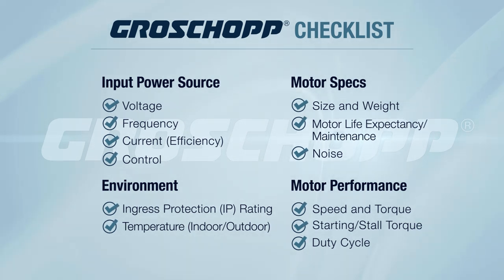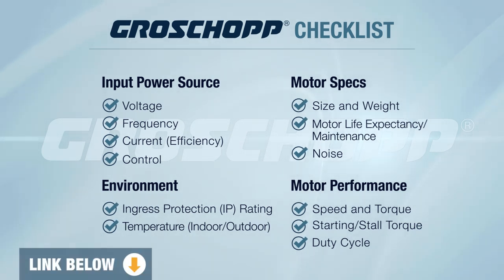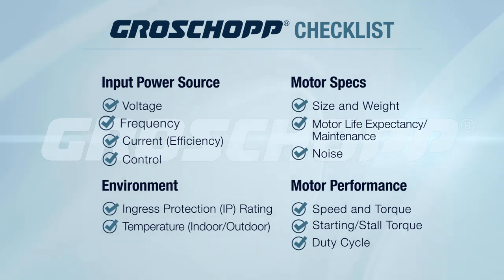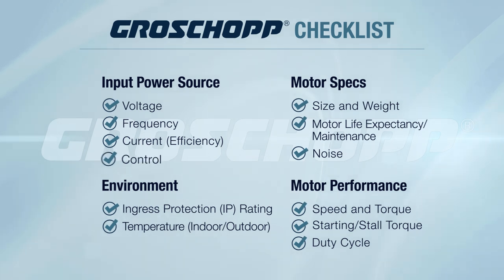We've provided a link below to download our application checklist. Let's start with the first constraint: input power. You need to know what the available voltage, frequency, and current limits are, and if a control will be needed to manage the motor within the application.